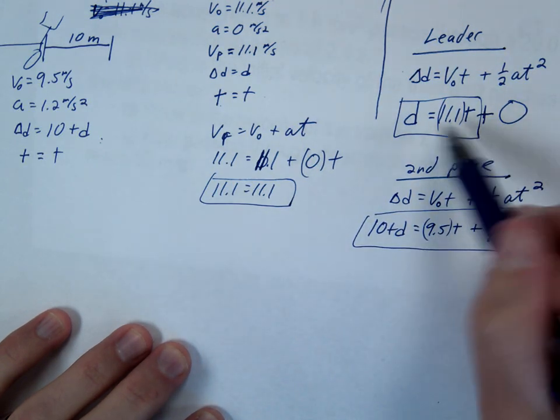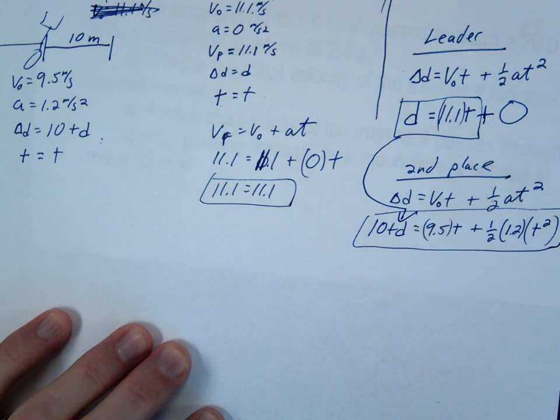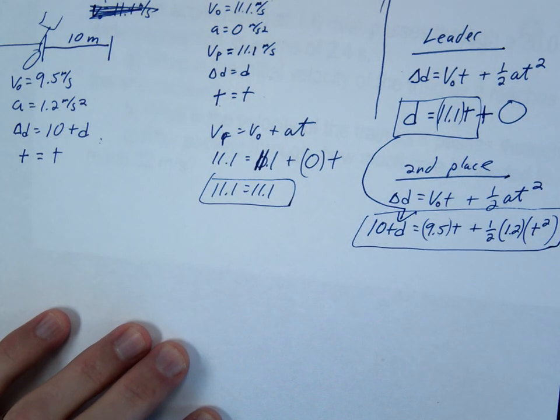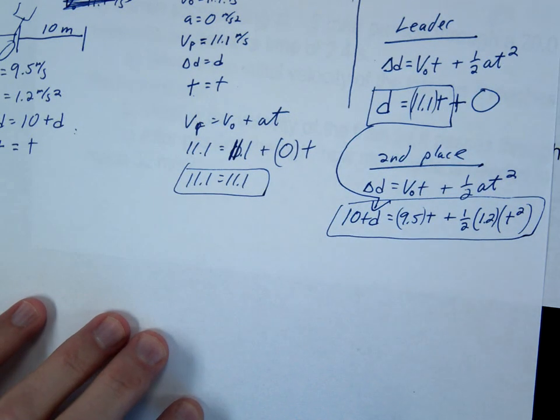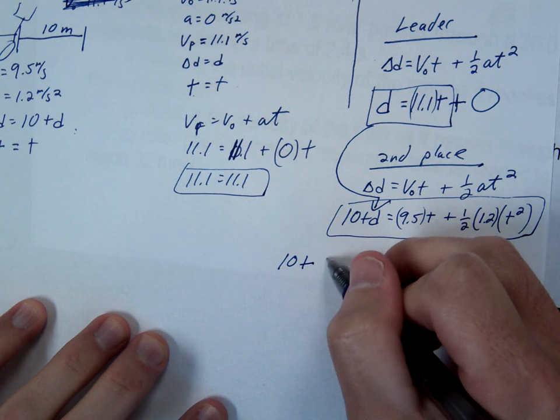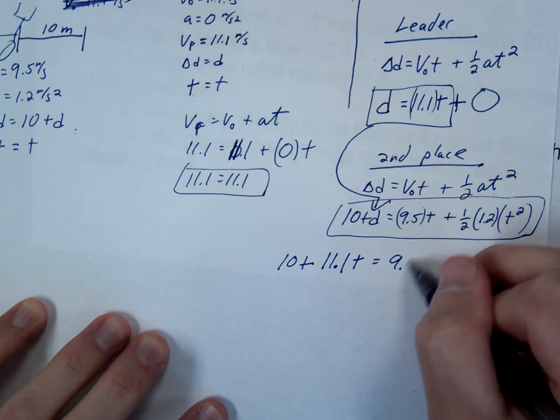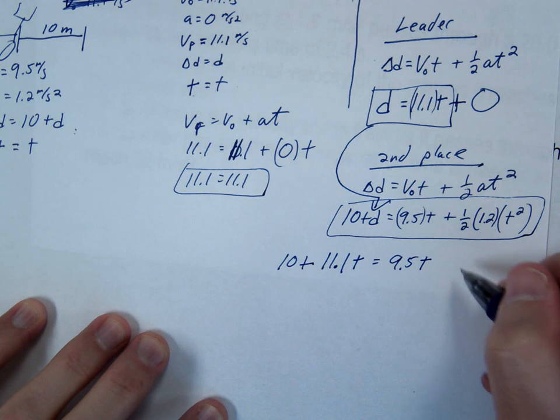So that's our second equation. The easiest way at this point really is just to substitute that d right into here, that first equation. So we're going to get 10 plus 11.1t equals the rest, 9.5t plus the rest. Let's just do the math here. 0.6t squared.